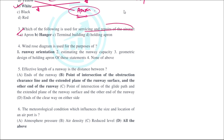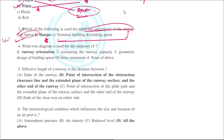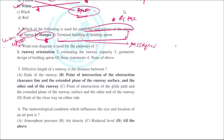The next question: which of the following is used for the servicing and repairs of the aircraft? A hangar is used for servicing and repair. The apron is only for unloading and loading of passengers and refueling. Servicing and repairs are a bigger task requiring separate dedicated locations — that is the hangar.